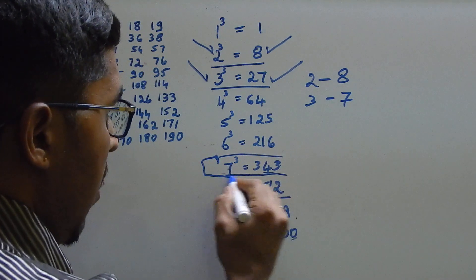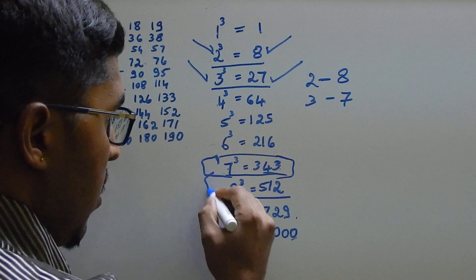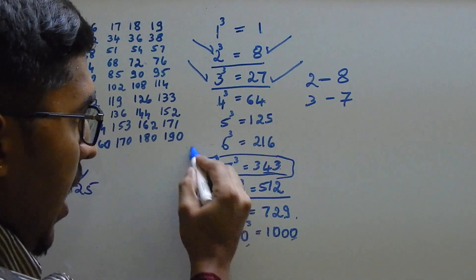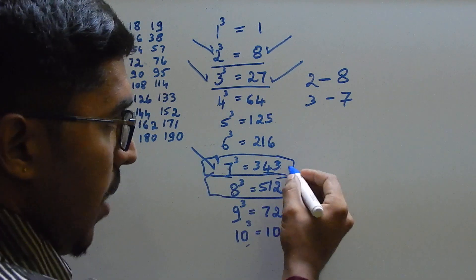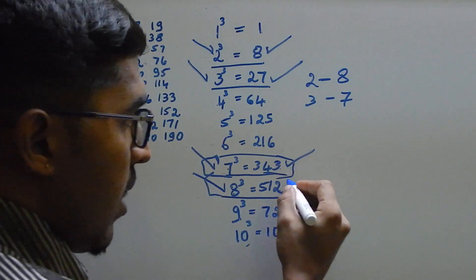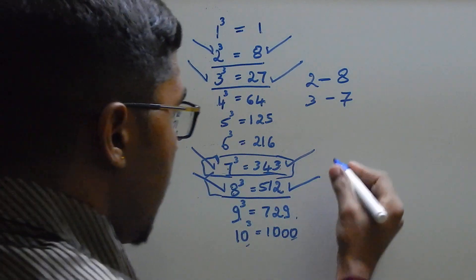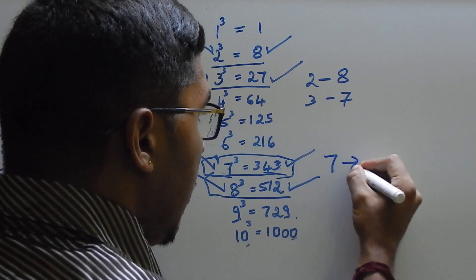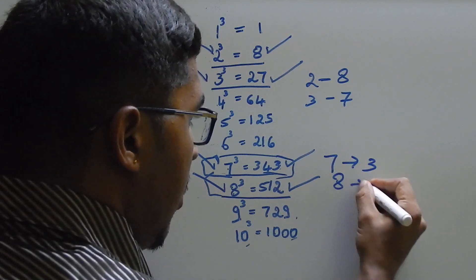Similarly, if you observe these two values, if there is number 7 in the LHS, that is number 3 in the RHS. There is number 8 in the LHS, there is number 2 in the RHS. It is 7, 3, 8, 2.